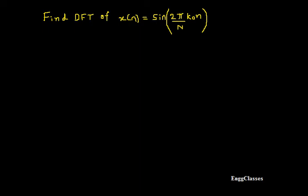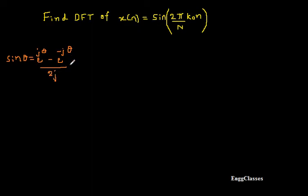Before I proceed to finding x(k) with the formula, let me rewrite x(n) in terms of its twiddle factor. For that I should know the concept from Euler's rule. Euler says that sin θ = (e^(jθ) − e^(−jθ)) / 2j. So now I will make use of this and simplify x(n), rewriting it in terms of exponential terms.